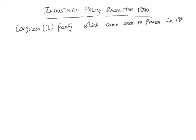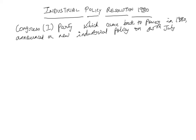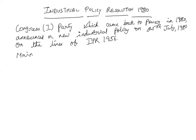The Congress government, which came back to power in 1980, announced a new industrial policy on 25th July 1980, on the lines of IPR 1956. If you remember, IPR 1956 gave a major role to the public sector and to heavy industries, whereas the 1977 policy announced by the Janata government shifted the focus from heavy industries to small-scale and cottage industries.